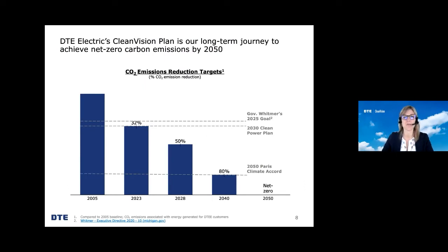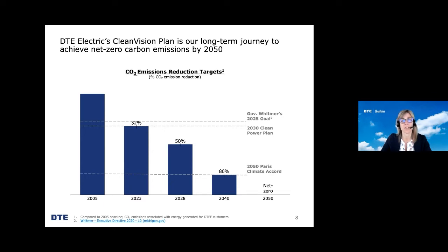Thanks everyone for attending our fourth and final session of DTE Electric's Clean Vision Virtual Open Houses. My name is Joyce Leslie, director of business planning and development. My teams focus on long-term electric generation strategy, which includes the integrated resource plan. I'm going to provide a quick recap of DTE Electric's carbon emission targets and briefly describe what an IRP is. DTE believes that climate change is one of the defining public policy issues of our time, and we're committed to getting as clean as we can, as fast as we can, while taking reliability and affordability into account.